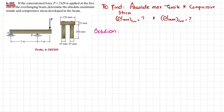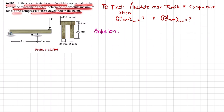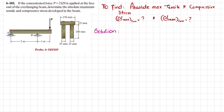Welcome back, problem 6-102. The statement is: a concentrated force P of 2 kN is applied at the free end of an overhanging beam. Determine the absolute maximum tensile and compressive stress developed in the beam. At point A there is a pin support, at point B a roller support, and at the free end P equals 2 kN is applied. Due to this loading, the upper layer will be in tension while the lower layer will be in compression.